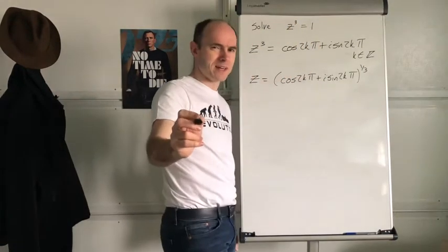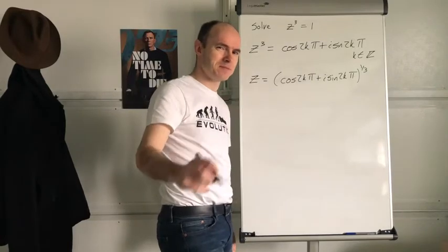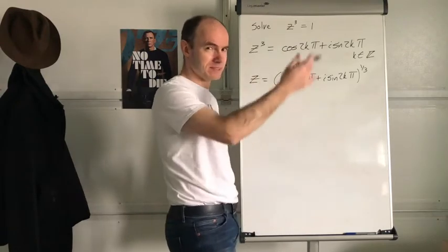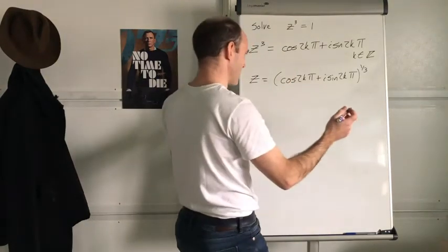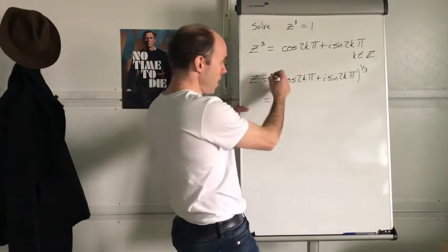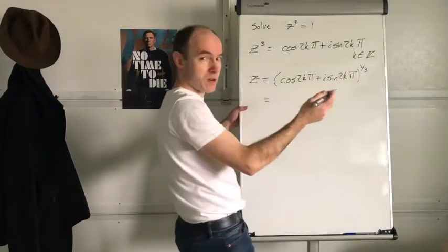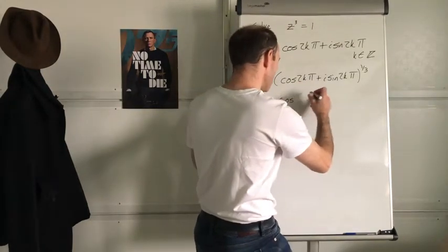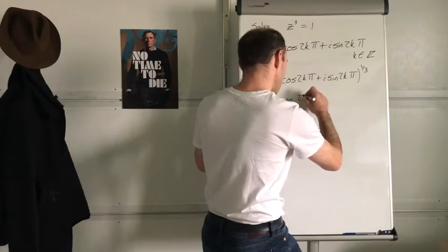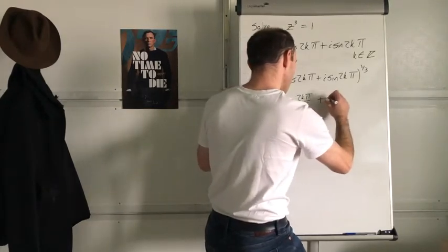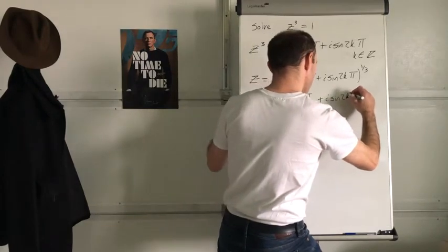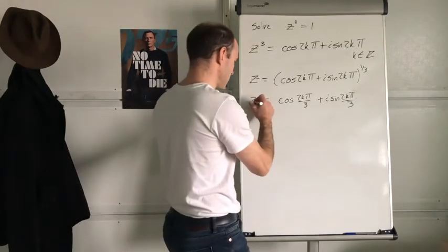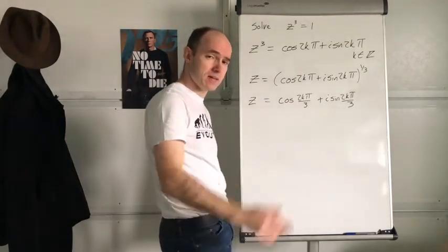Do you know what's coming next? De Moivre's theorem — that's why I haven't used n. De Moivre's to the power of one third. So 1 to the power of one third is of course 1. And we write it as cos(2kπ/3) + i·sin(2kπ/3). That's what z is, where k is equal to any integer.